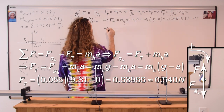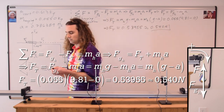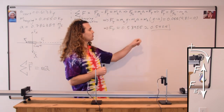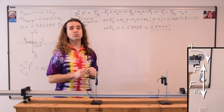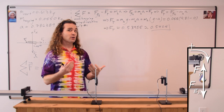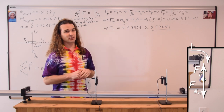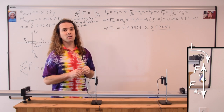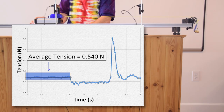The tension force of 0.540 newtons is our theoretical prediction. Let's see if it matches our experimental observation. The average measured tension force during part one is 0.540 newtons, so for part one, the theoretical prediction matches the experimental observation, which is good.